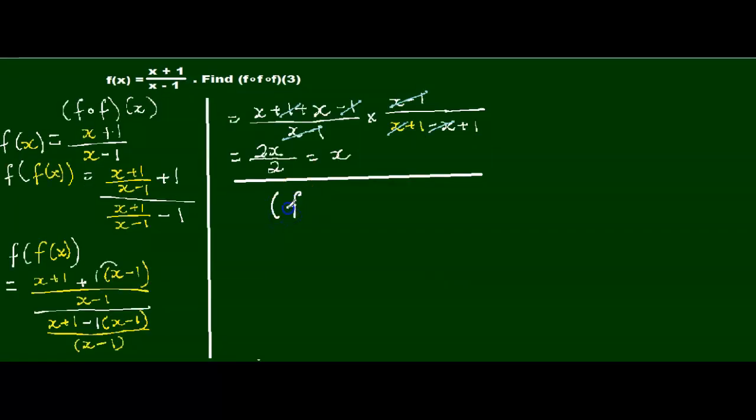Now we need to do another function composition again. f of f of f of x. Now, what's going on here? Our f of f of x is now x, so our expression becomes f of x, which is x plus 1 over x minus 1.